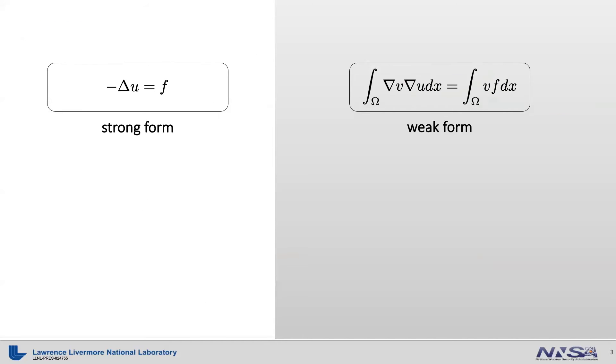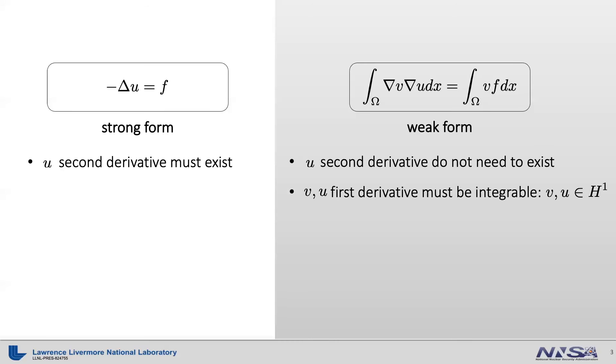Let's compare the original Poisson equation and the weak form. We call this original second order differential equation as a strong form. The reason for strong versus weak will be clear when we contrast the requirements of each form. For example, the solution function U must have second derivatives in the strong form. Otherwise, it does not make sense at all. On the other hand, for the weak form, the function U does not need to have second order derivative. Instead, it only needs to have its first derivative and must be integrable on omega. The same requirement applies for the test function V.